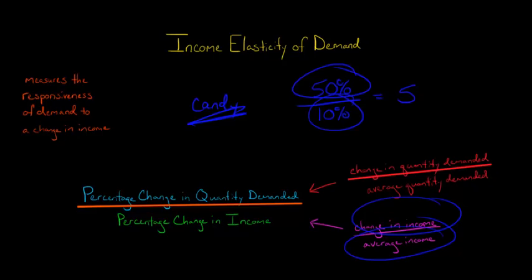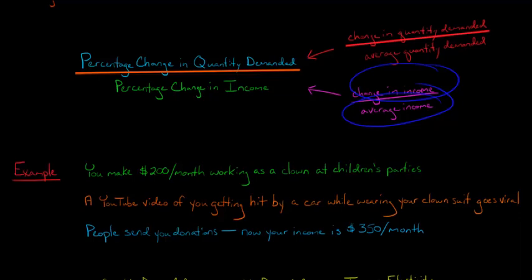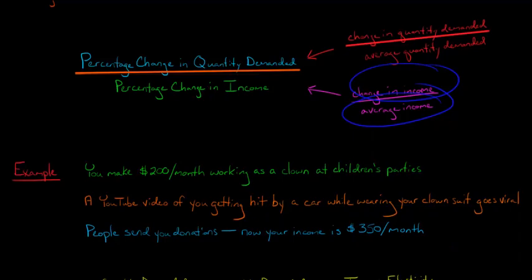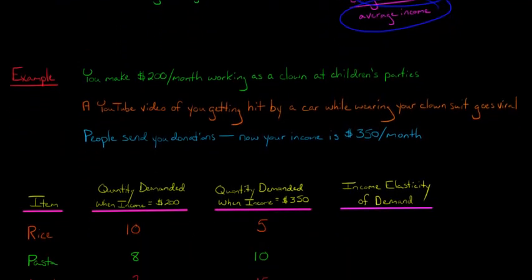Let's go through a concrete example with actual numbers. Say you make $200 a month working as a clown at children's parties. Then a YouTube video of you getting hit by a car while wearing your clown suit goes viral. People feel bad and send you donations, setting up a GoFundMe, and now your income has increased to $350 a month. You have become wealthier.